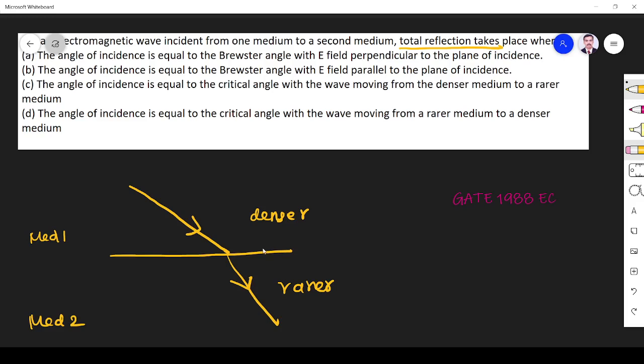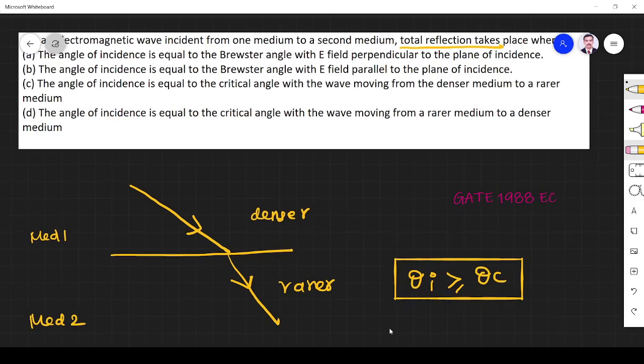Another condition that should be satisfied is angle of incidence must be greater than or equal to critical angle. So these are the two conditions to be satisfied when you want to have total internal reflection.